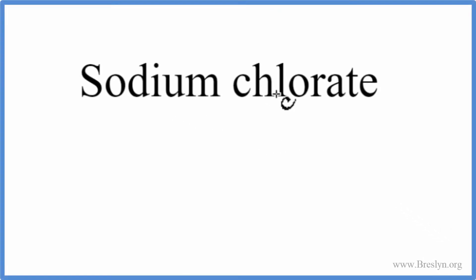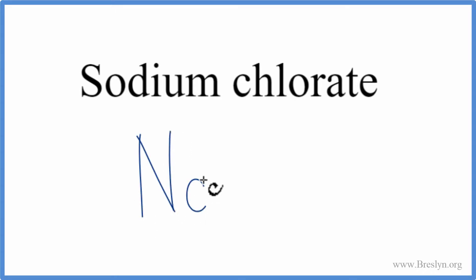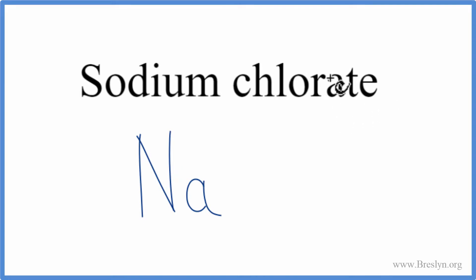To write the formula for sodium chlorate, we go to the periodic table and look up sodium — that's Na. For chlorate, you won't find that on the periodic table; when we see this '-ate' ending, we need to look it up on a table of common polyatomic ions. So chlorate is ClO₃⁻.